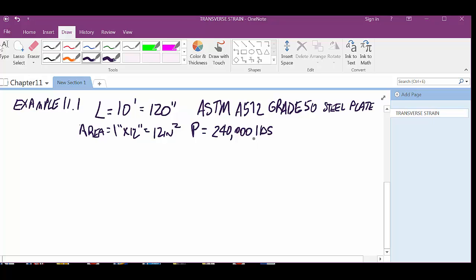Proportional limit is 45,000 PSI, and I don't remember what the proportional limit signification is. Let's see. Man, they're really not showing that, are they? Interesting.